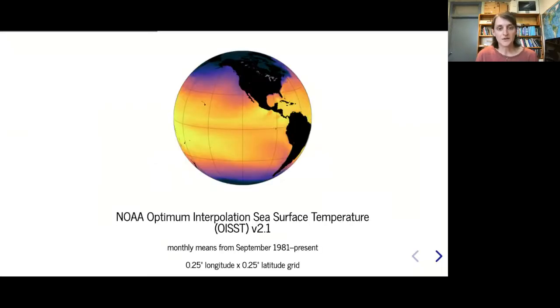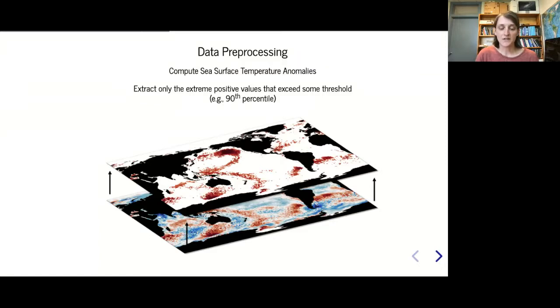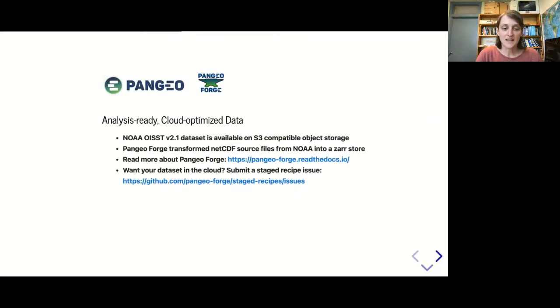I'll run through an example showing how to use OAStrack. I'm taking a dataset from NOAA called the Optimum Interpolation Sea Surface Temperature dataset, using monthly means from September through present. It's a quarter degree grid, a really nice clean dataset that's been bias corrected and ready to go. The NOAA OIST dataset is available on S3 compatible object storage and we're using tools from Pangeo Forge, which converts the NetCDF source files into a Zarr store.